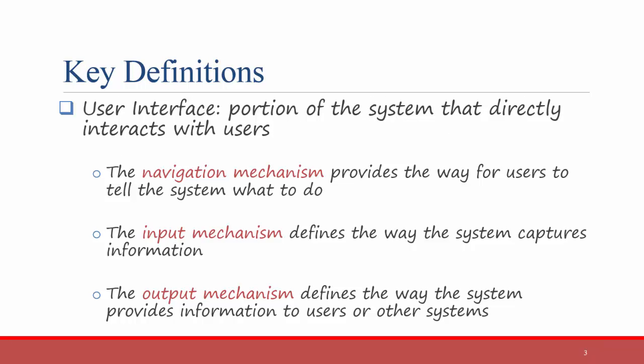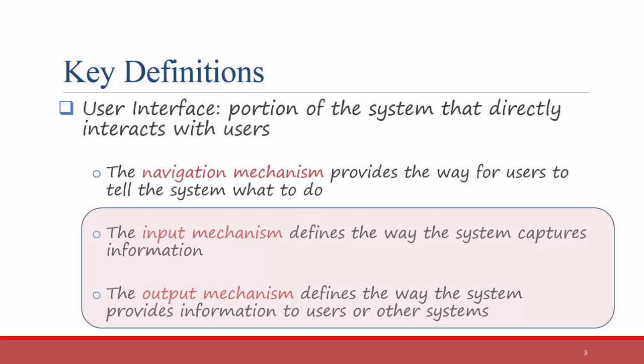If you remember back to a previous video, we defined a user interface as having three key components. This video focuses on two of those three: the input mechanism, defining the way the system captures information, and the output mechanism, defining the way that the system provides information back to the users or to other systems.